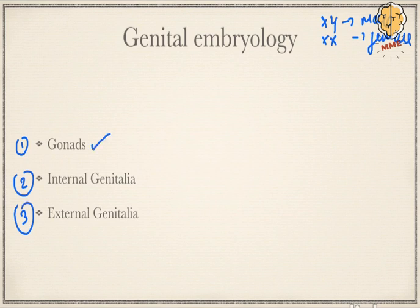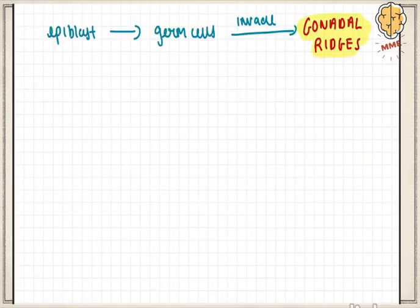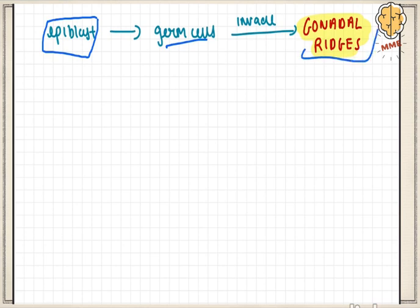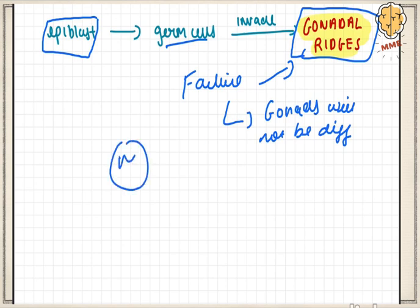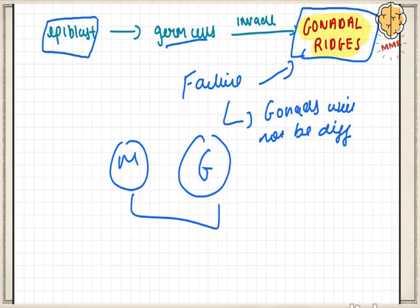In gonadal development, after gastrulation the epiblast gives rise to germ cells that invade the gonadal ridges. Invasion of the gonadal ridges is essential for gonadal development. If germ cells fail to reach the gonadal ridges, the gonads will not differentiate. Originally, male and female gonads are so similar that they cannot be distinguished until one set invades the ridges.